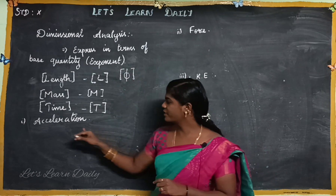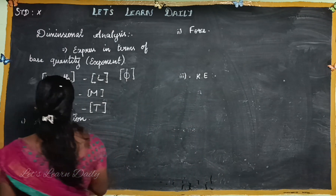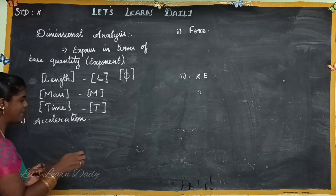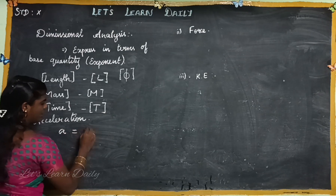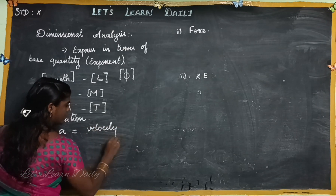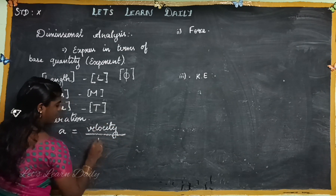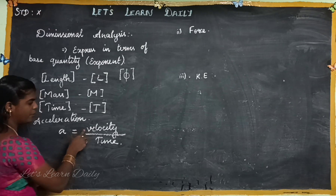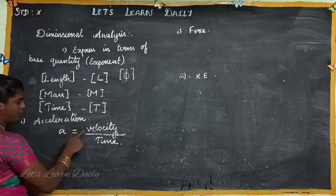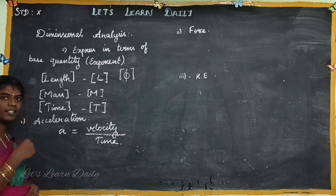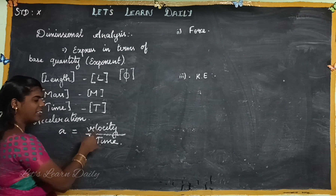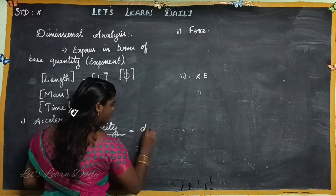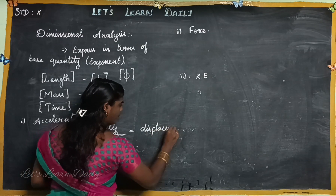So, acceleration — what is the formula? Acceleration is the rate of change of velocity. So the formula is velocity divided by time taken. Now, if I want to find the dimension, I want to convert it to base quantities. Velocity is the rate of change of displacement, so velocity equals displacement divided by time taken.